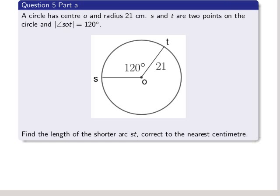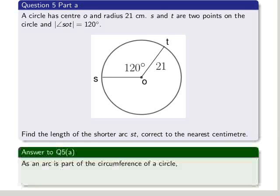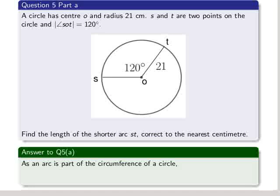Part A. The circle has a centre O and a radius 21 centimetres. S and T are two points on the circle and SOT is 120 degrees. Find the length of the shorter arc ST correct to the nearest centimetre. As an arc is part of the circumference of a circle,